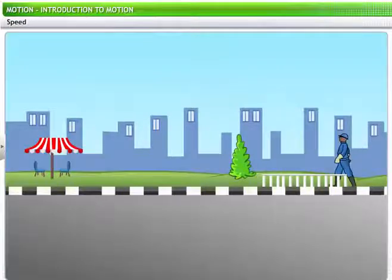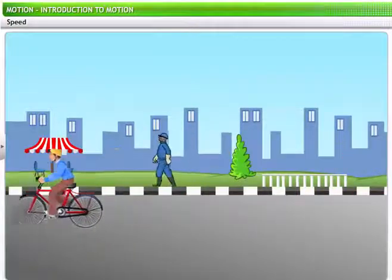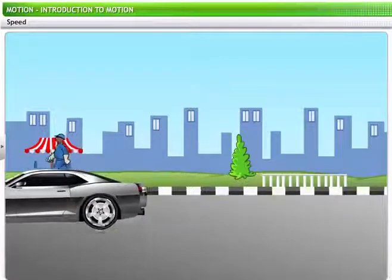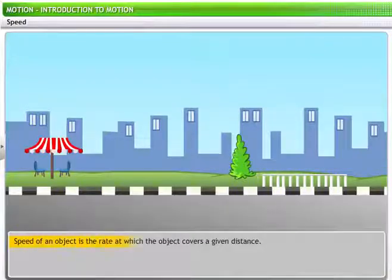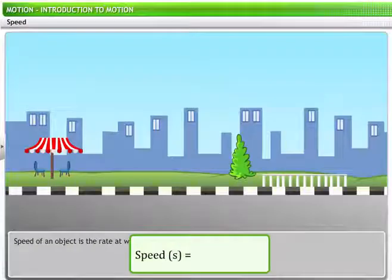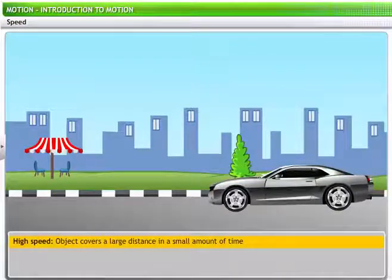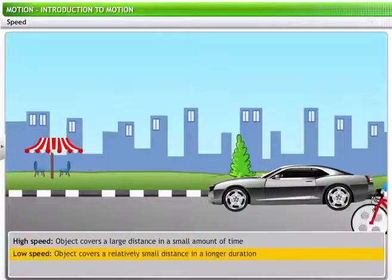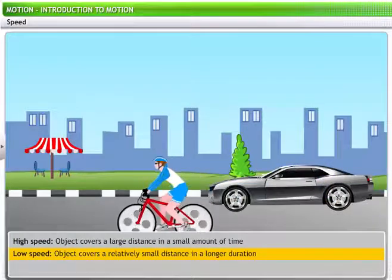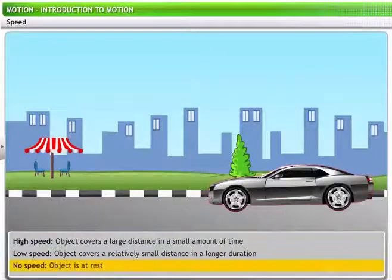Different objects may take different amounts of time to cover a given distance. How fast does a moving object change its position? The answer to this question relates motion to the time taken for the change of position, and that brings us to speed. Speed of an object is the rate at which an object covers a given distance or changes its position. Speed is calculated as the ratio of distance covered to the time taken to cover that distance. Thus, an object that covers a relatively large distance in a short amount of time is moving at a high speed. Conversely, a slow-moving object has a low speed and covers a relatively small amount of distance in a relatively longer duration. An object at rest has no speed.